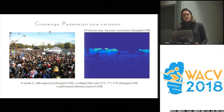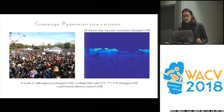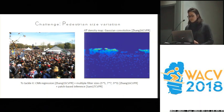One of the main challenges in crowd counting is that pedestrians appear at very various sizes, as you can see in this image. To tackle this issue, previous works have created networks with multiple filter sizes and a patch-based inference.